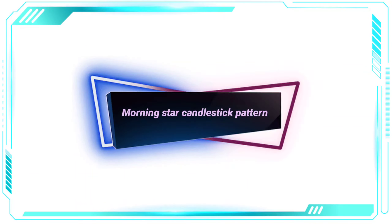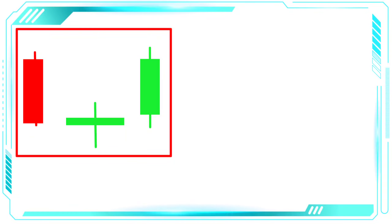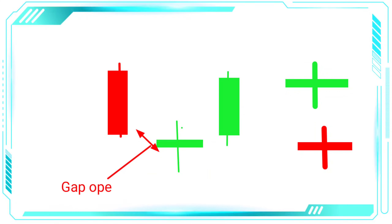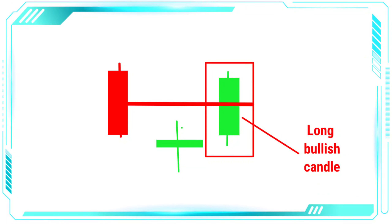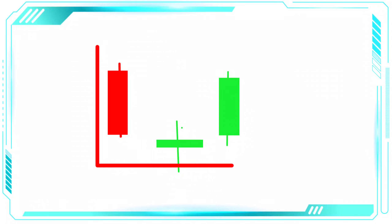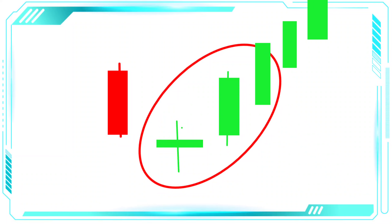Let's talk about the morning star candlestick pattern, one of the most reliable bullish reversal patterns in technical analysis. The morning star pattern is made up of three candles. The first candle is a long bearish candle. The second candle is a small candle that can be bullish or bearish and gaps down from the previous day's close, and the third candle is a long bullish candle that closes above the midpoint of the first candle. This pattern shows that the bears were in control during the first day, but the bulls took over on the second and third days, leading to a possible trend reversal.